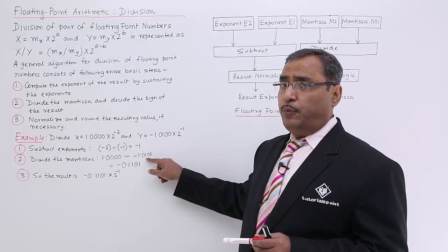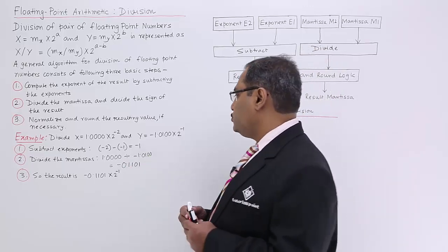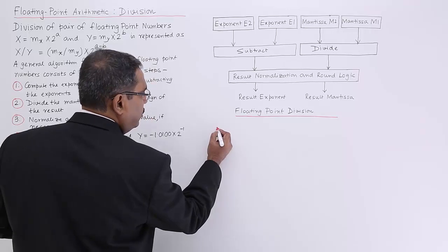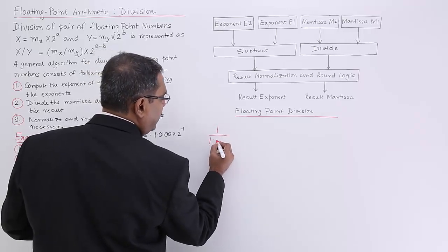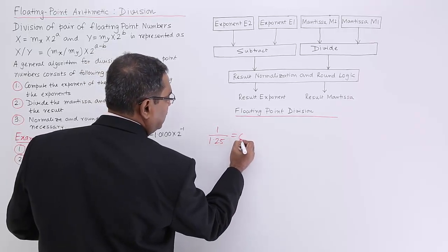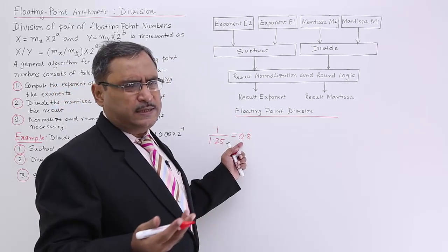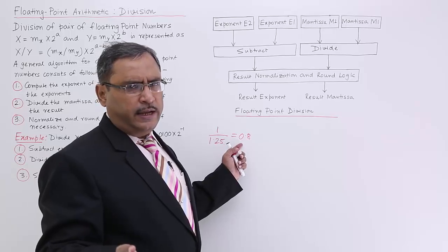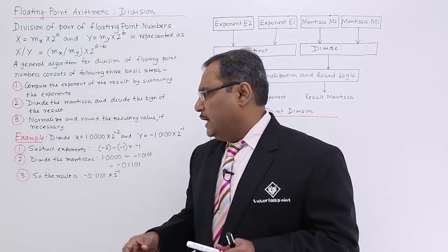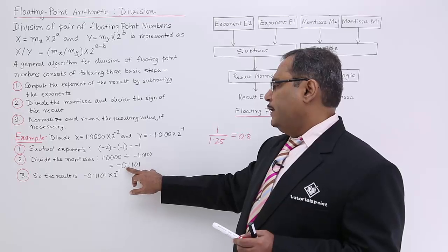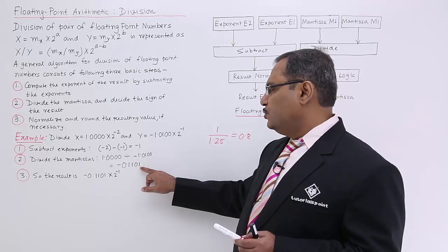So that is 0.25. So actually what you are doing here, you are doing 1 by 1.25, and which is nothing but 0.8. You can do the calculations at your end, and now just express 0.8 in binary number system. You will be getting like 0.1100111.